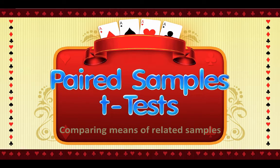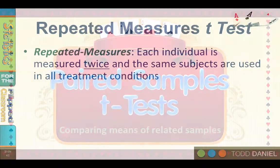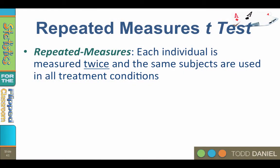The test that we will learn about now is called a paired samples t-test. The paired samples t-test allows us to compare means between two paired or related samples. There are two ways to create paired samples: repeated measures and matched samples. The paired samples t-test uses repeated measures.